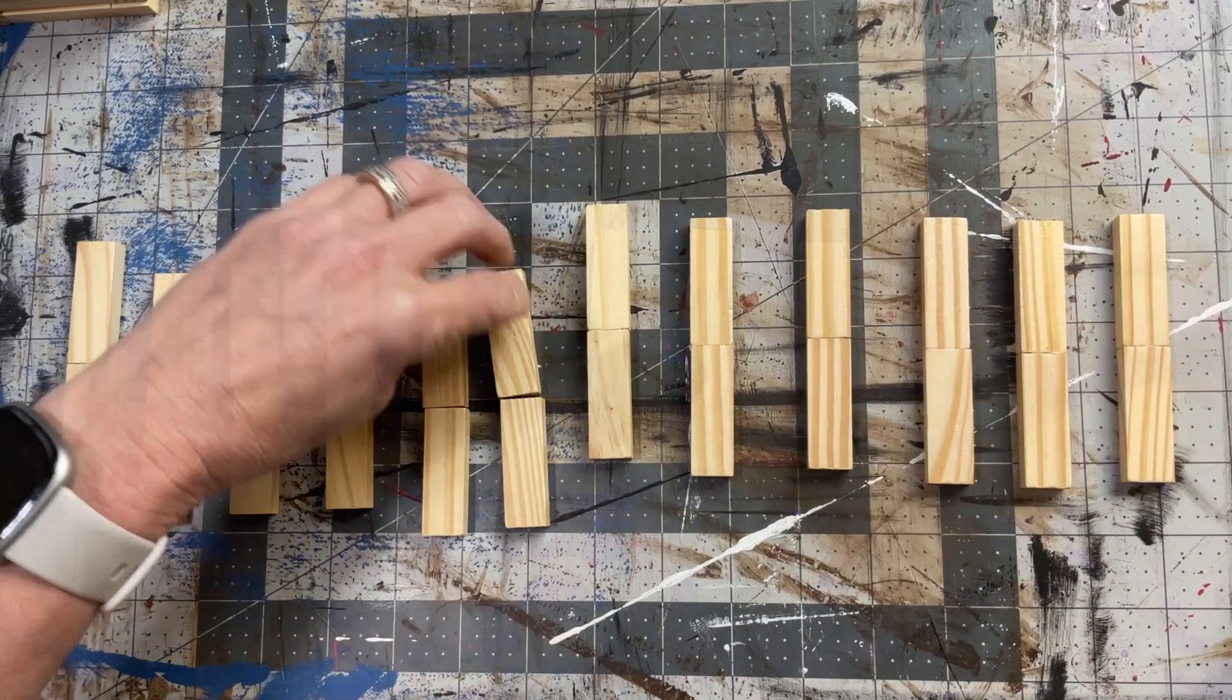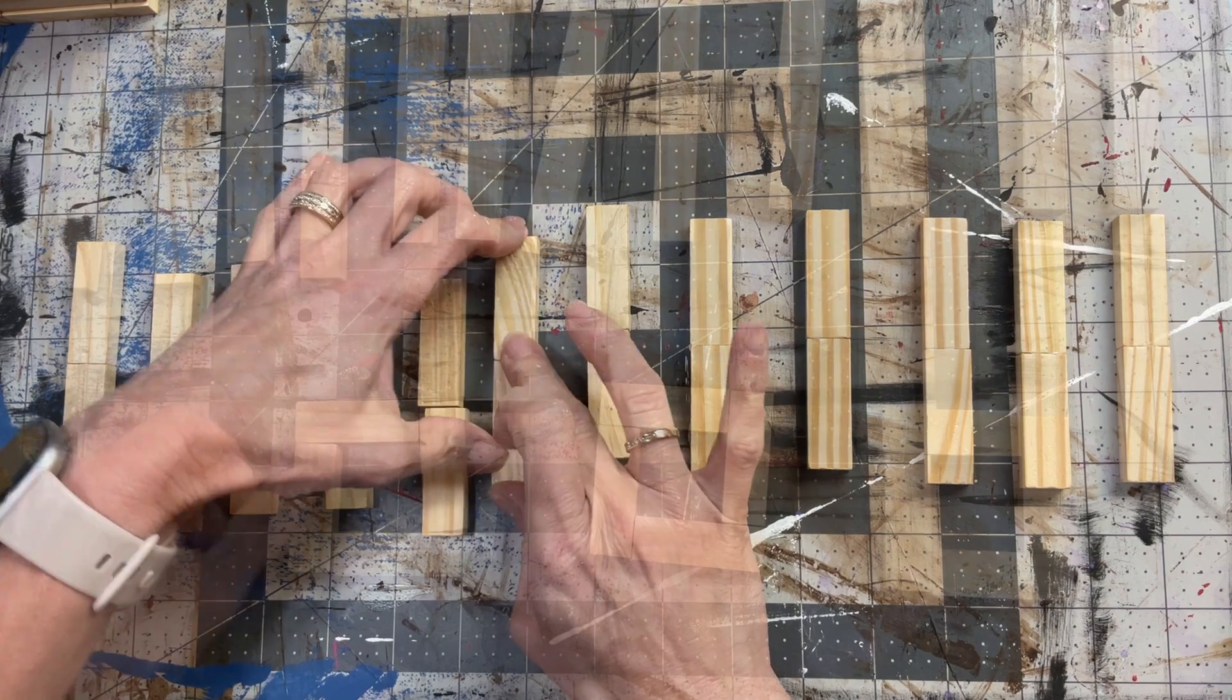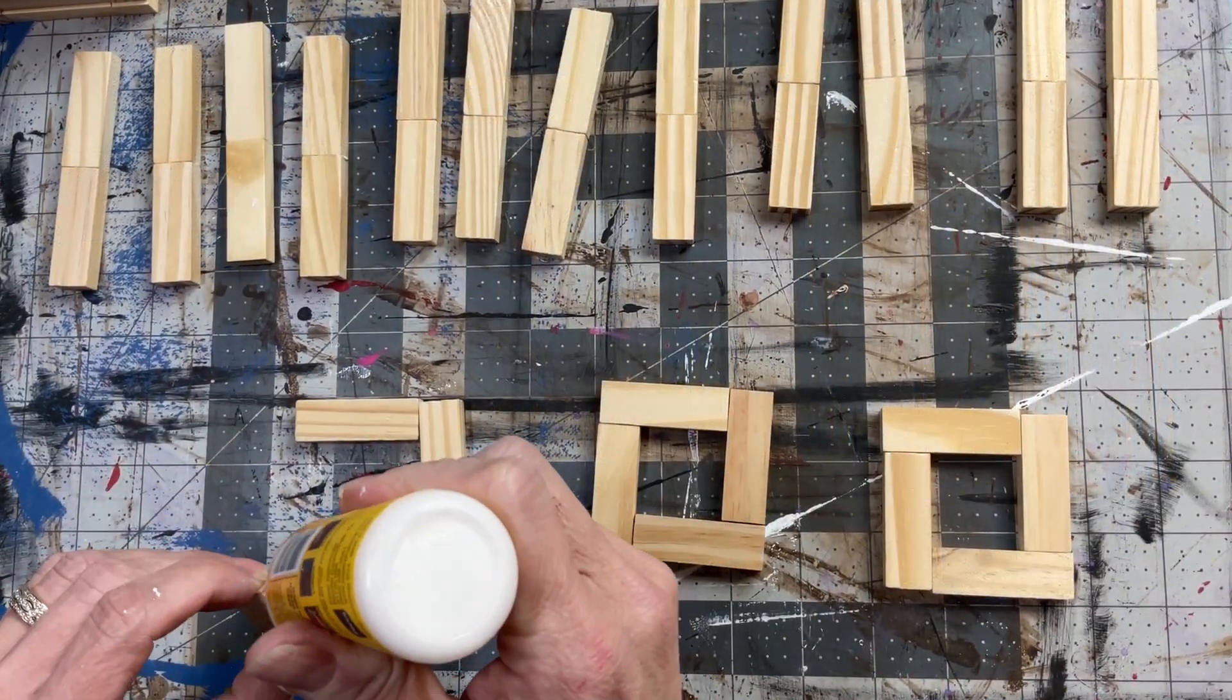The next thing you're going to need for each lantern is four more sticks of two blocks. Okay? So, I've got 12 here. We're going to just glue them together like we did before, gluing the two together on the long side.